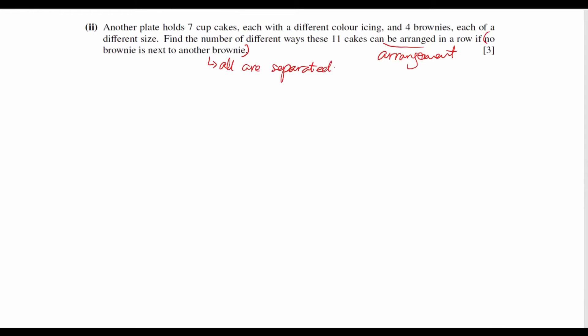So all the brownies are separated which is the restriction by the questions. So in order to consider this, first we just put 7 dashes here, indicating the places for 7 cupcakes. And for these 7 cupcakes the number of ways will be 7 factorial.